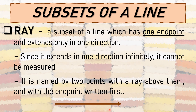A ray is named by two points with a ray symbol above them, with the endpoint written first. For example, the endpoint is point A and the other point is point B. Using the ray symbol above, and since the endpoint must come first, it is read as Ray AB.